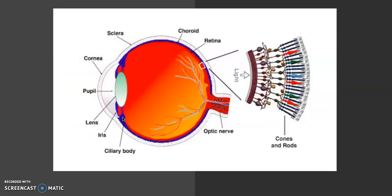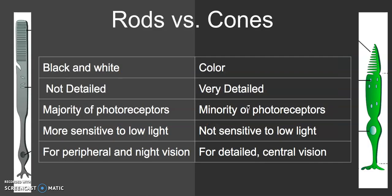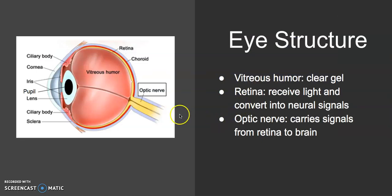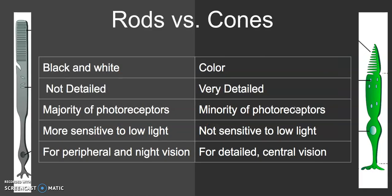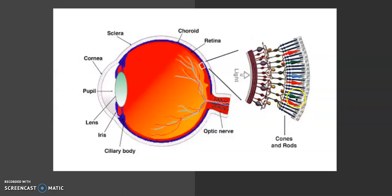Zooming in on the retina — the retina has different types of photoreceptors called cones and rods, as well as other things like bipolar cells that we'll skip for today. Both rods and cones take light information in and convert that to neural signals that go down the optic nerve. We have rods on the outside and cones in the middle.